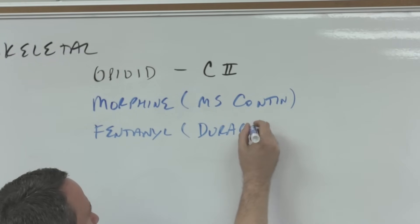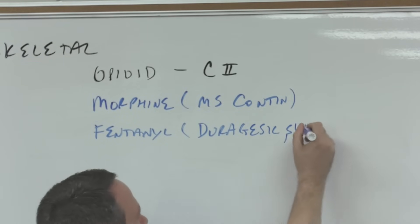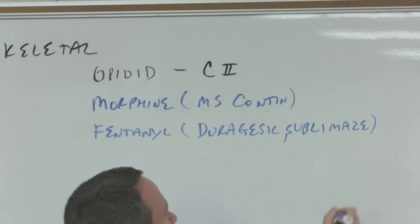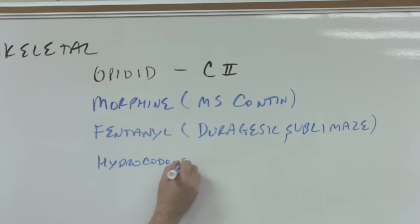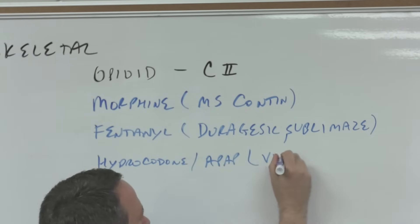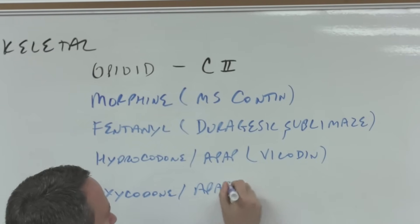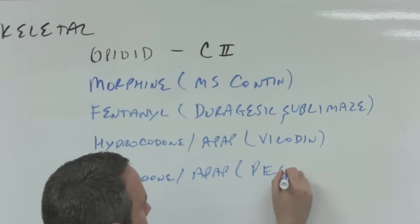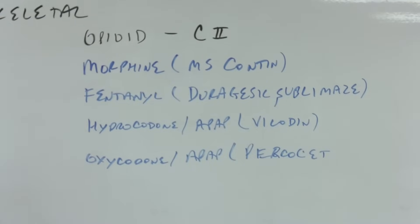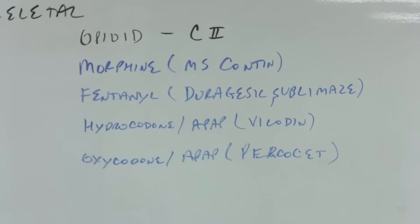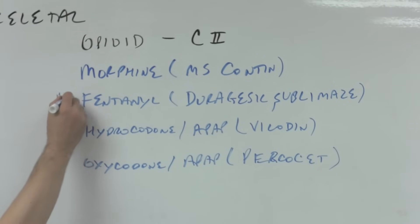Then we have hydrocodone with acetaminophen, that's Vicodin, and then oxycodone with acetaminophen, and that's Percocet. All right, so we've got four C2 opioids, and you'll notice that I've got it alphabetically here but not here. Why? Well, morphine was the first drug; it's a prototypical drug. If you have something like that, you want to take it and put it at the top, and then you'll alphabetize the ones that come after it.